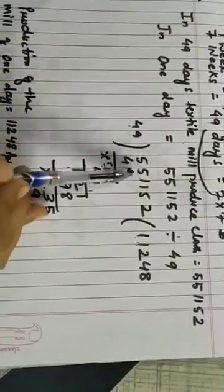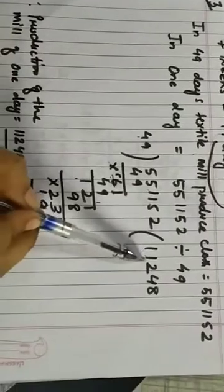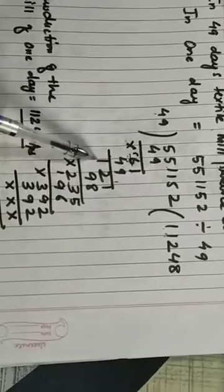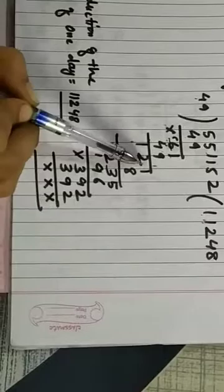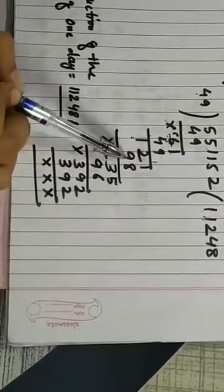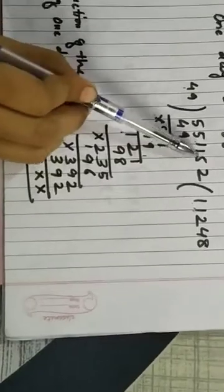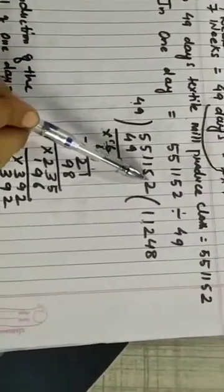49 into 1 is 49. So 15 minus 9 equals to 6, and 4 minus 4 is 0. Again we will take one number down. So 49 into 1 is 49. Again 11 minus 9 equals to 2, and 5 minus 4 equals to 1. Again we will take one number down. Now 49 into 2 is 98. So 11 minus 8 equals to 3, and 11 minus 9 equals to 2. Again we will take one number down — that is 5. Now 49 into 4 is 196. So 15 minus 6 equals to 9, and 12 minus 9 equals to 3, and 1 minus 1 is nothing.